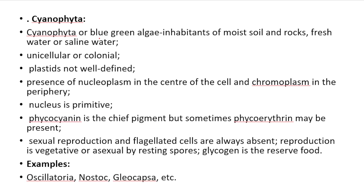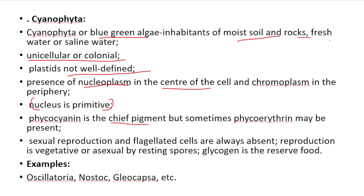Cyanophyta: Also called blue-green algae. Inhabitants of moist soil, rocks, and fresh water. May be unicellular or colonial. Plastids are not well-defined. Nucleoplasm is present in the center of the cell and chromoplasm in the periphery. Nucleus is primitive. Phycocyanin is the chief pigment. Sexual reproduction and flagellated cells are always absent. Reproduction is vegetative and asexual by resting spores. Reserve food is glycogen. Examples: Oscillatoria, Nostoc, Gloeocapsa.